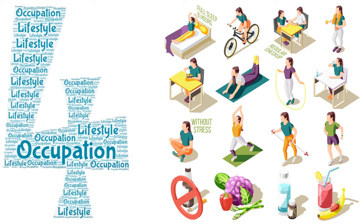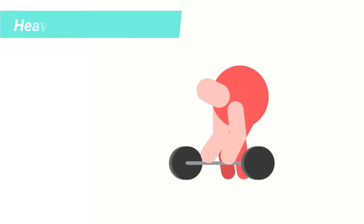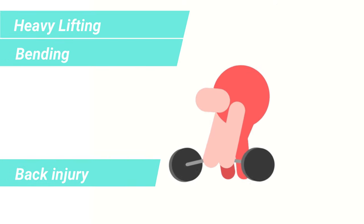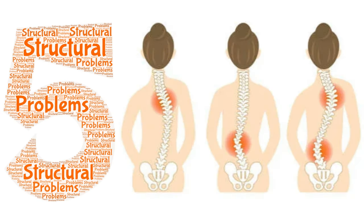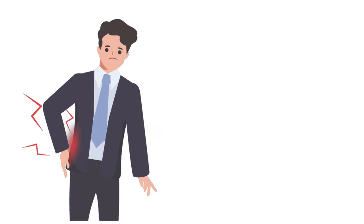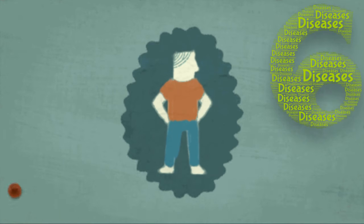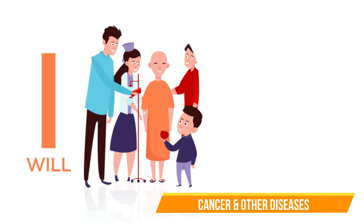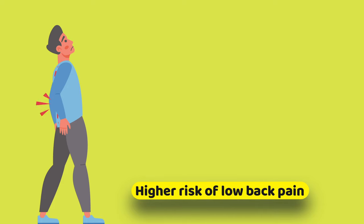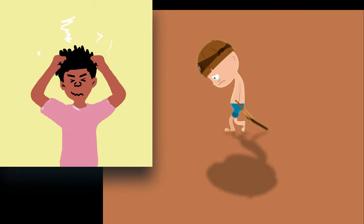Fourth is occupation and lifestyle. Jobs and activities that require heavy lifting or bending can increase the risk of a back injury and can again lead to back pain. Fifth is structural problems. Severe back pain can result from conditions such as scoliosis, which can change your spine alignment. Sixth is diseases. People who have a family history of osteoarthritis, certain types of cancer and other diseases may have a higher risk of low back pain. Seventh is mental health. Back pain can also result from depression and anxiety.